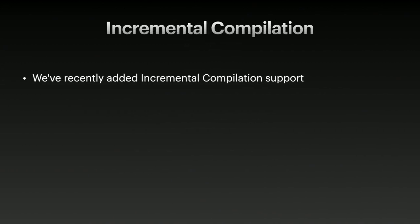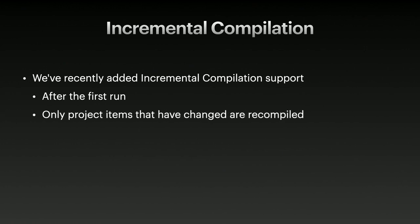Just before this XDC, we introduced incremental compilation in the test builds. Incremental compilation is something our other platforms have had for a while, but it's brand new to Android. This means that after you've had a successful run and we've compiled your whole project with no errors, only the project items that changed after that point are recompiled. This can make a big difference in speed — how long you have to wait after making a small change before hitting run again.